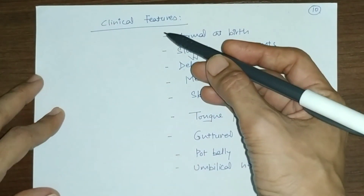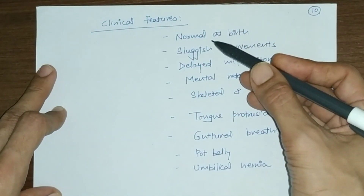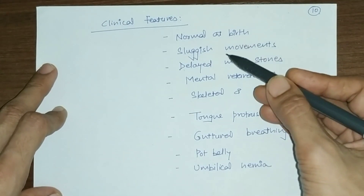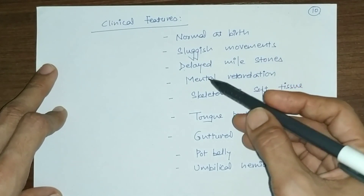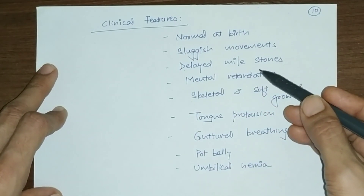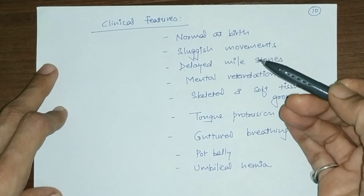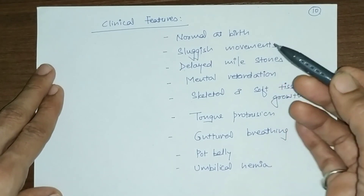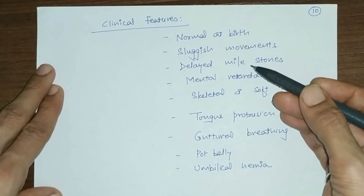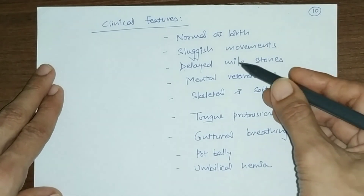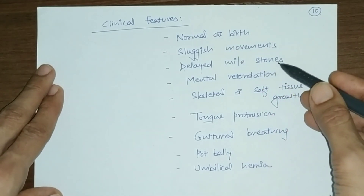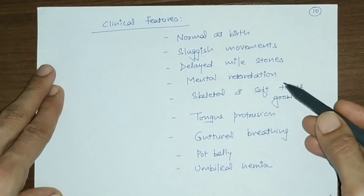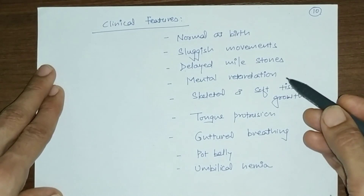Clinical features of cretinism: the baby is normal at birth because maternal thyroid hormones are present in the circulation. However, movements are sluggish and developmental milestones are delayed — such as holding the head or recognizing familiar individuals. If untreated, this results in mental retardation, because thyroid hormones are important for nervous system development.